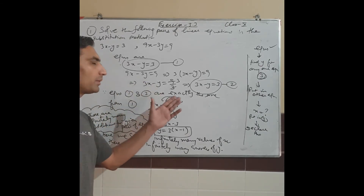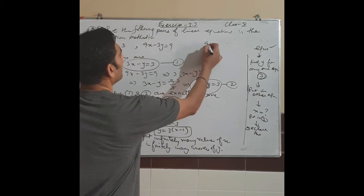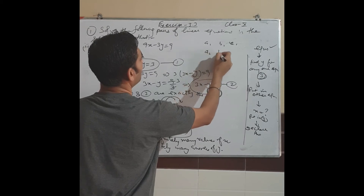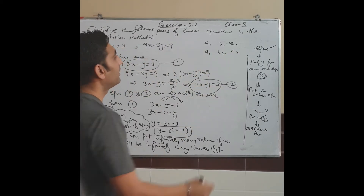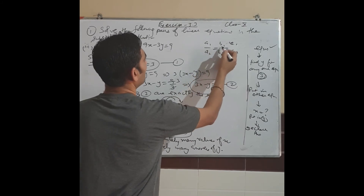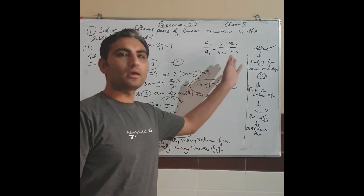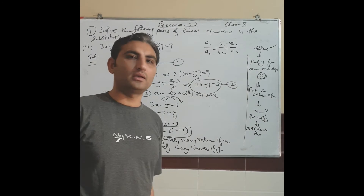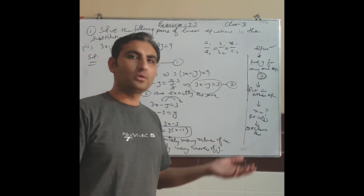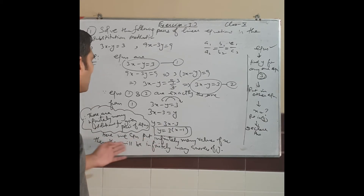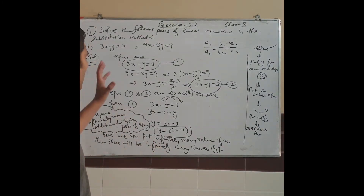So there will be infinitely many solutions. Therefore we say: this pair has infinitely many solutions. You can also solve it using the condition method — find a1, b1, c1 and a2, b2, c2 in standard form and show their ratios are equal. In that condition we say there is a pair of coincident lines, or infinitely many solutions.